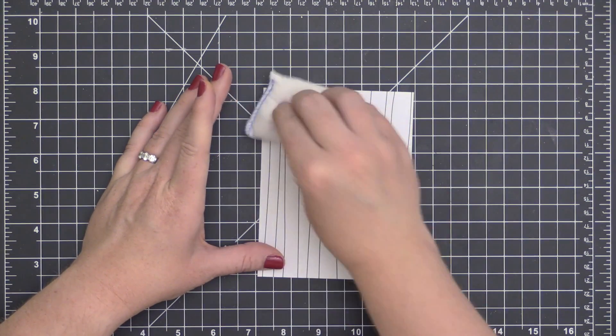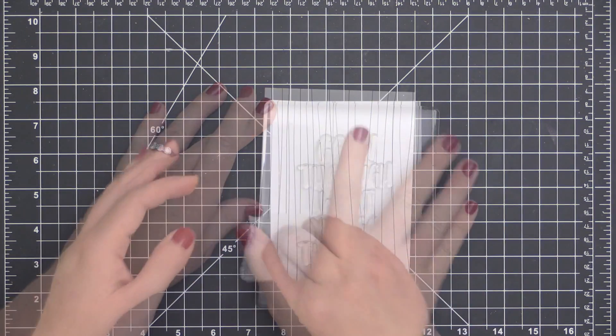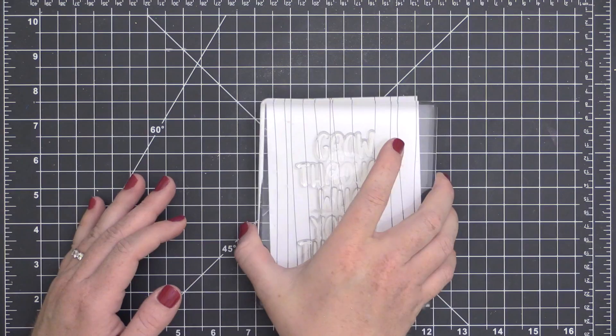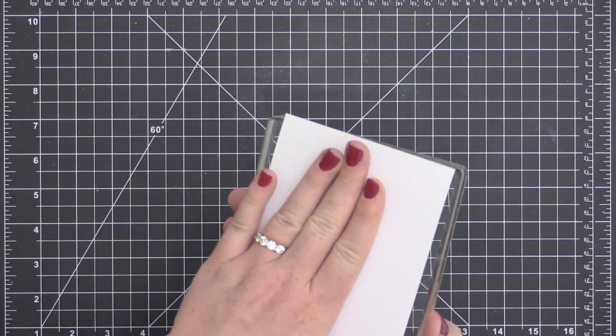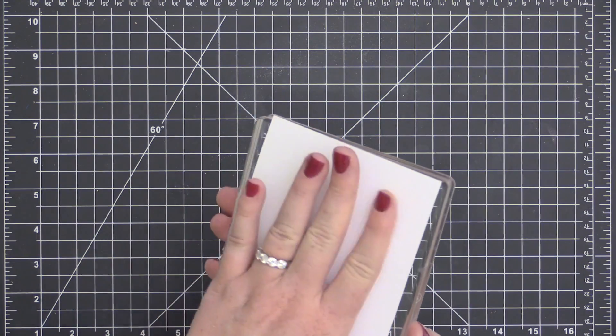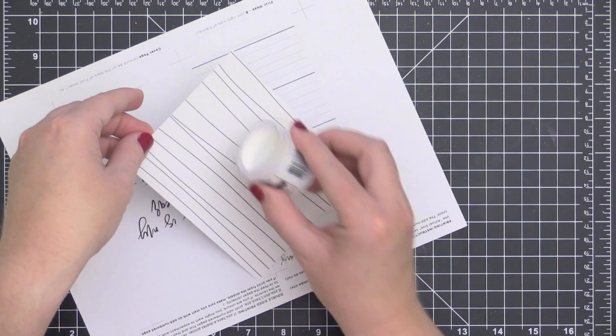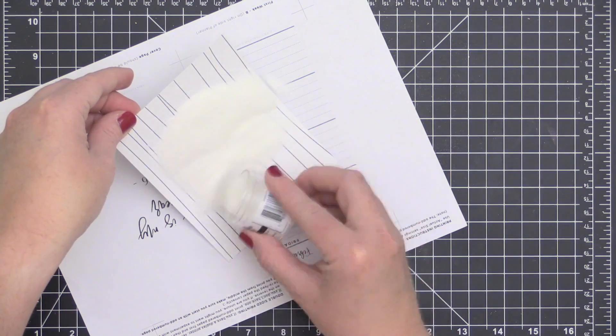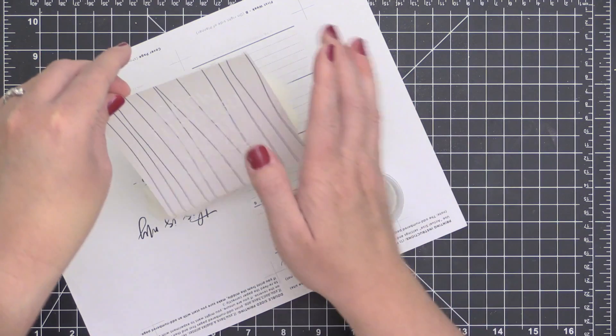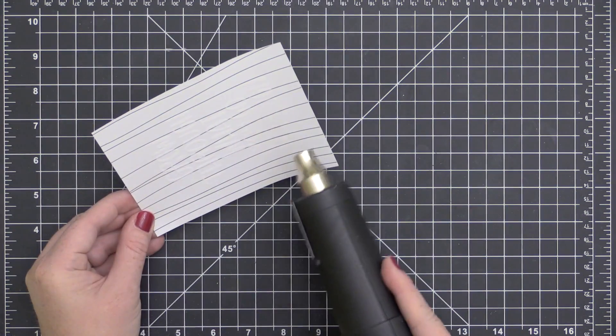I was trying to mat that piece onto this new Essentials by Ellen pattern paper pad. It's all black and white pattern paper, it's awesome. I thought, you know what's better than mounting this pink piece on that? Making a whole new piece with that same sentiment right on top of it.